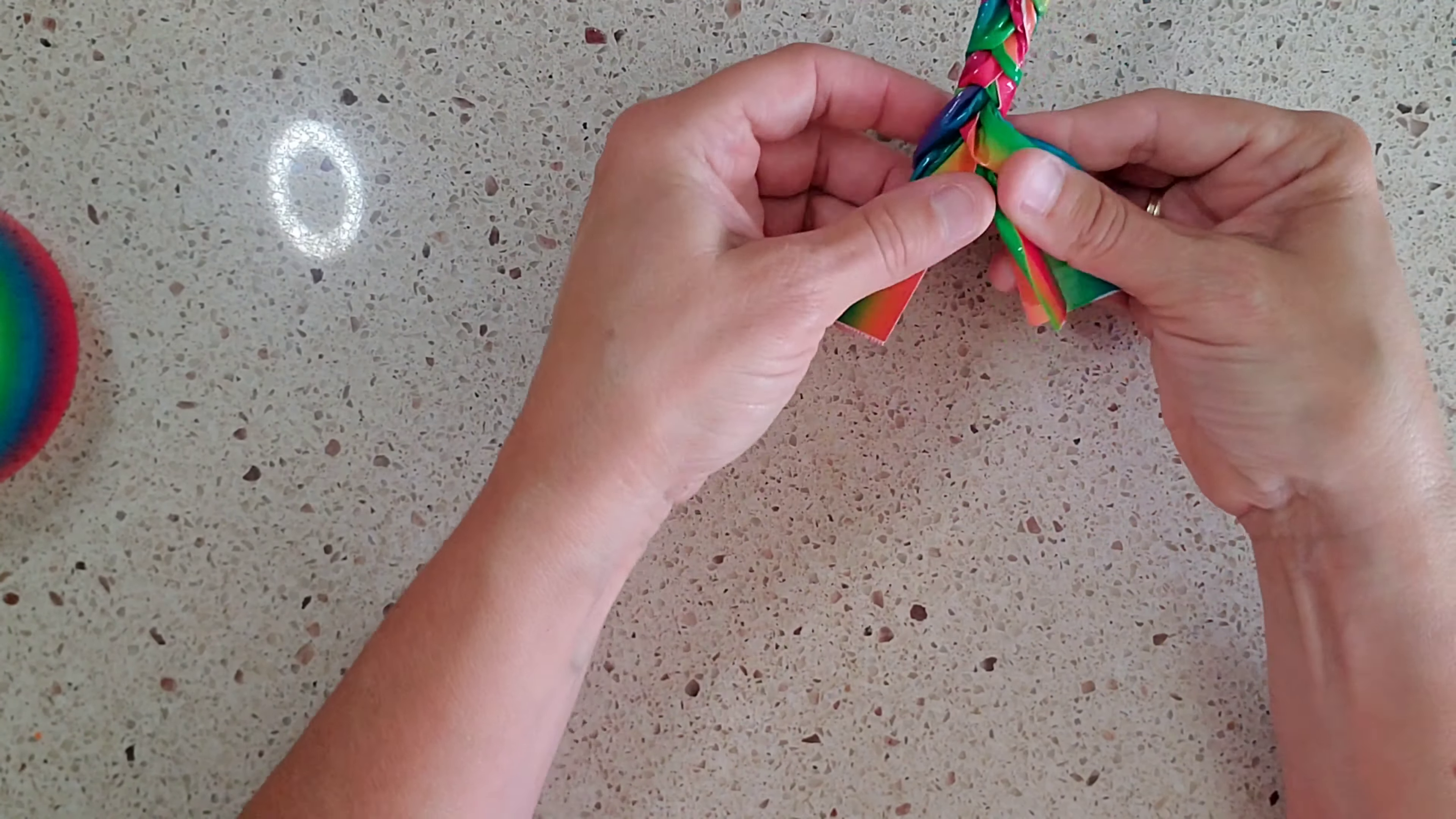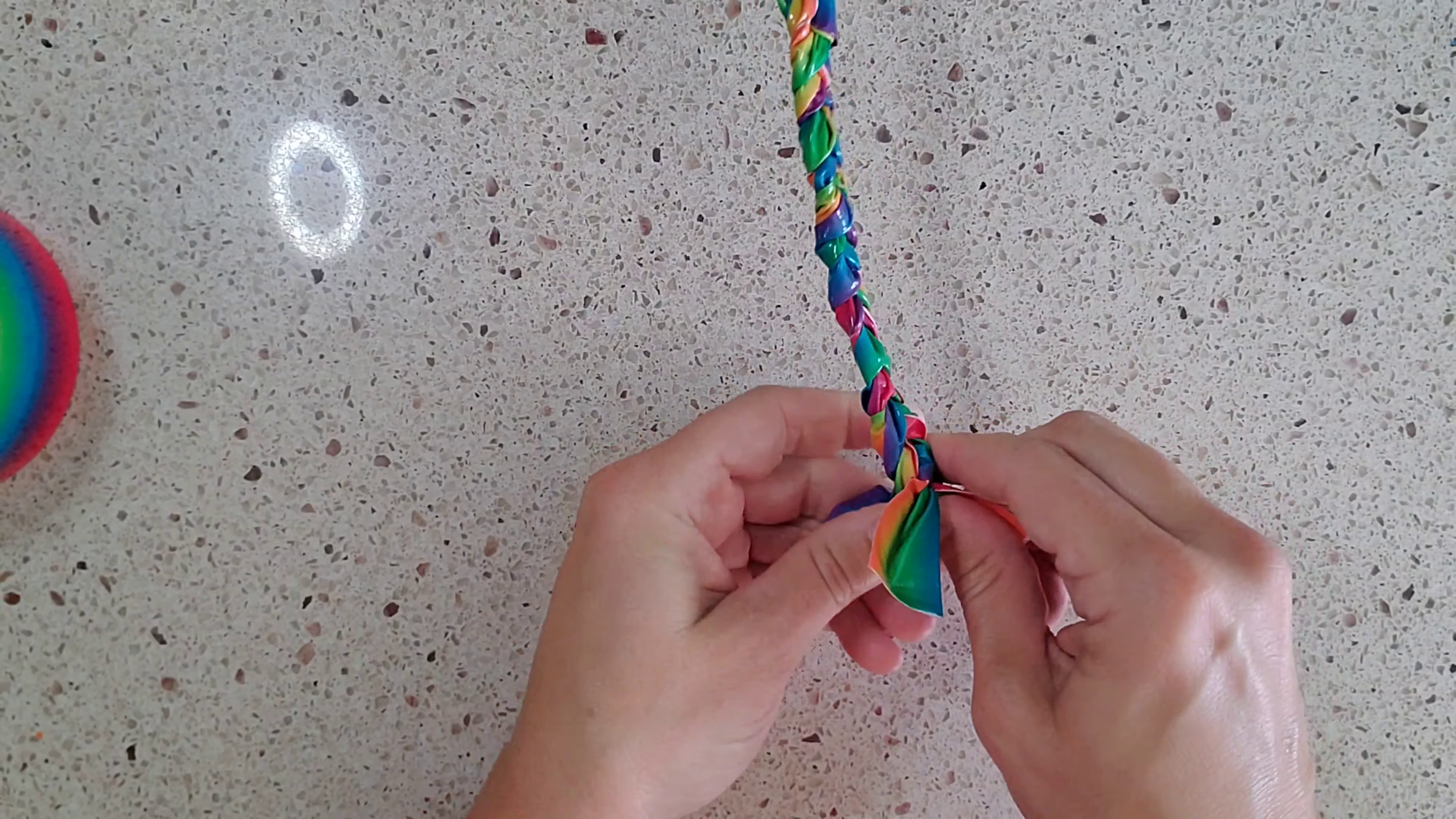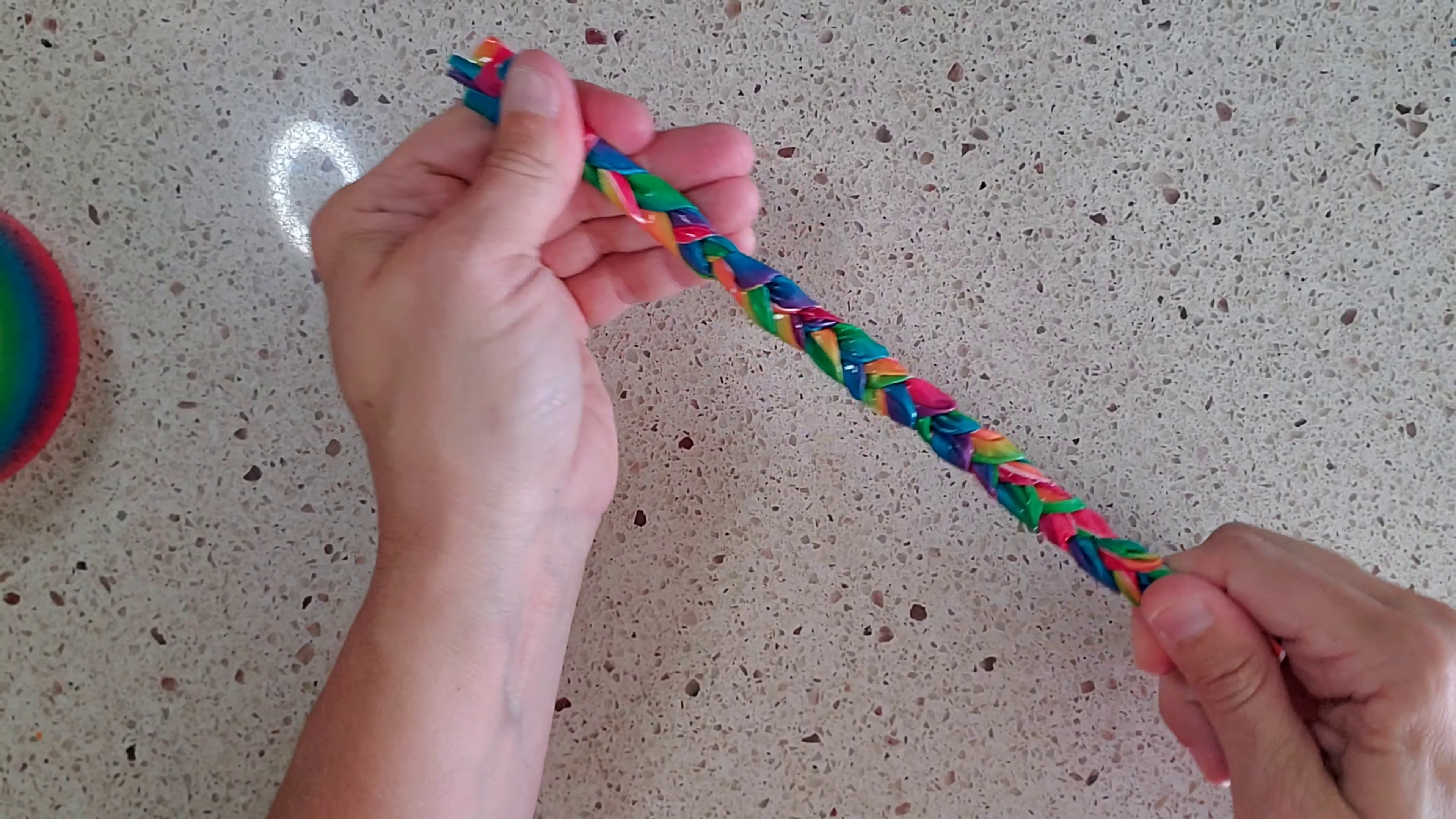So then you are going to do the same thing with this piece except you are going to have to probably braid a little more but sometimes you have to braid backwards at the top meaning going the opposite direction if you need more. It depends on how big your wrist is.